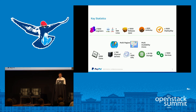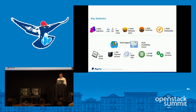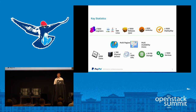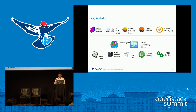I just want to give you some idea about the PayPal cloud. PayPal has a very large-scale private cloud deployment. Specifically, we have many regions, many availability zones. We have more than 500,000 cores and many VMs in all the data centers. This just gives you some idea about the size and scale of our private cloud.